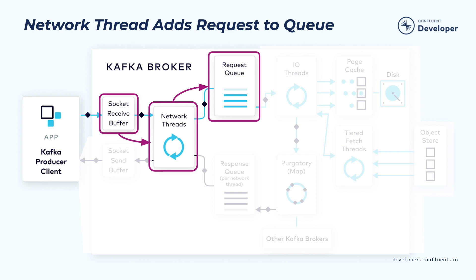The produce requests will first land in the socket receive buffer on the broker. From there, it will be picked up by one of the network threads. Once a network thread picks up a particular client request, it will stick to that particular client for the rest of its life. Since each of the network threads is used to multiplex across multiple clients, the network thread is designed to only do work that's lightweight. For the most part, the network thread just takes those bytes from the socket buffer, forms a produce request object, and puts that into a shared request queue.